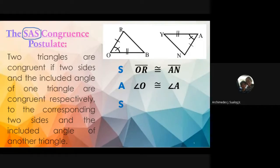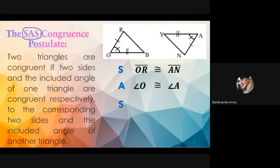Next, how about the other side? Arceo answers: side OB is congruent to side AY. Even though the triangle is flipped, they know the congruent parts based on the markings. Side OB is congruent to side AY — do not reverse the letters incorrectly or the angle will be wrong.